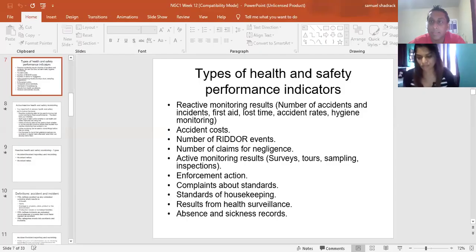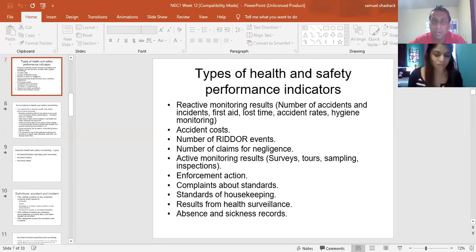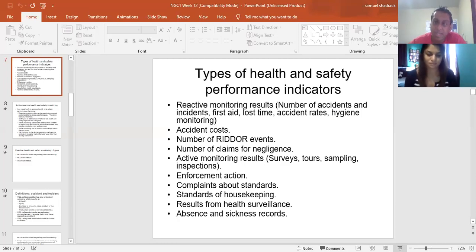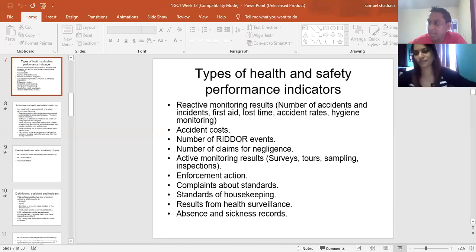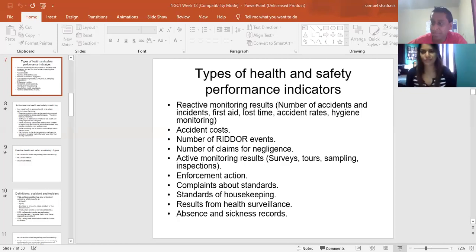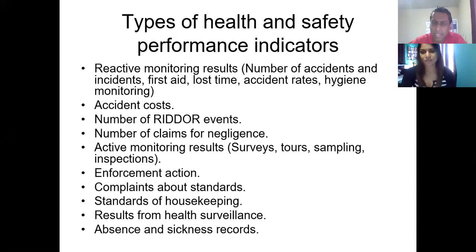We ended last week by talking about the need for measuring performance. There are two main means of measuring performance: active and reactive. The active would have been inspections, which is also towards sampling as well as auditing.